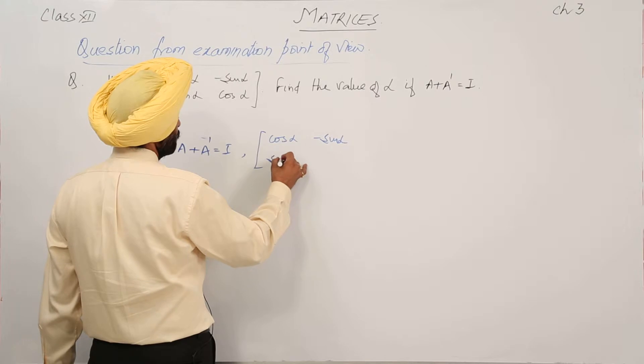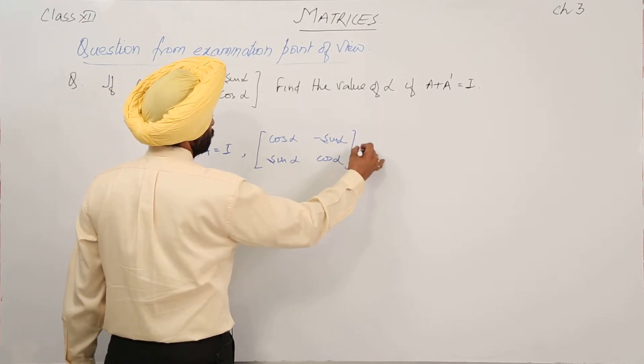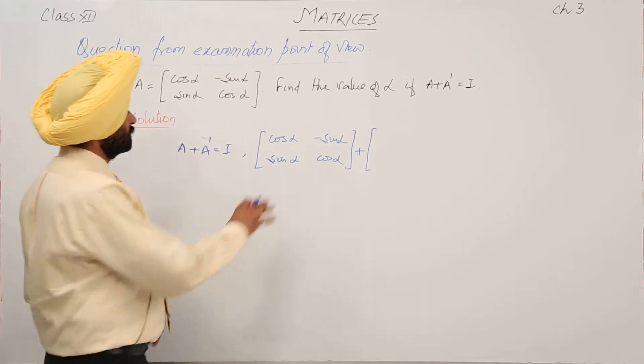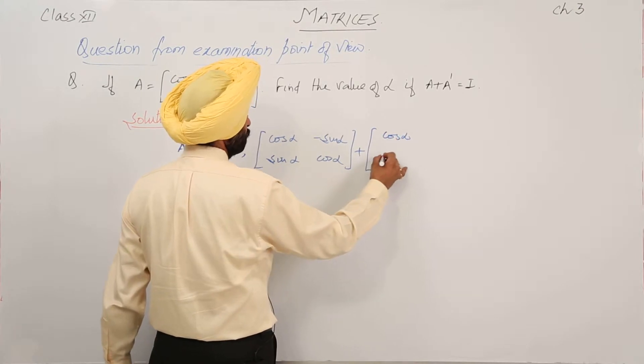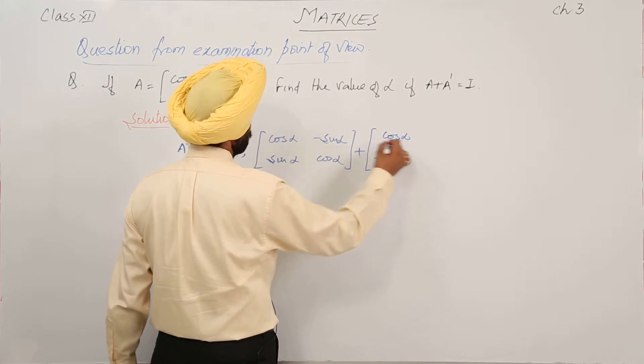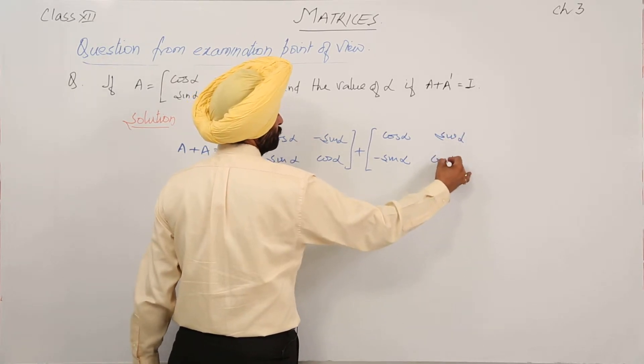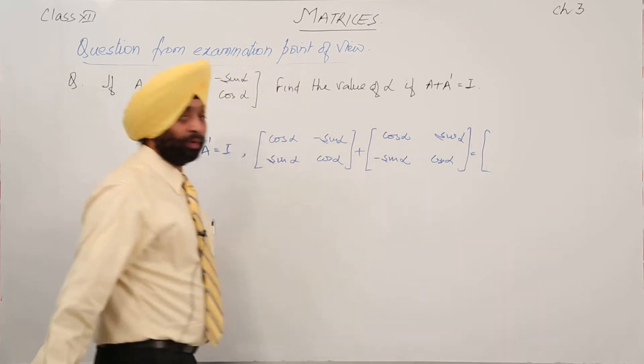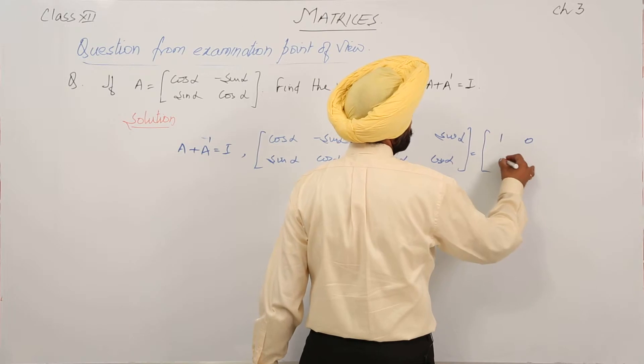sin alpha, cos alpha, plus the transpose of A. We have cos alpha, minus sin alpha, sin alpha, cos alpha, equal to the identity matrix 2 by 2: 1, 0, 0, 1.